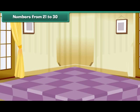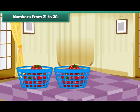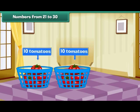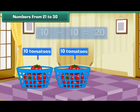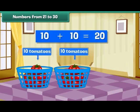Numbers from 21 to 30. Look at these two baskets of ripe tomatoes. Each basket contains ten tomatoes. Therefore, we have two groups of ten, which means we have 20 tomatoes.